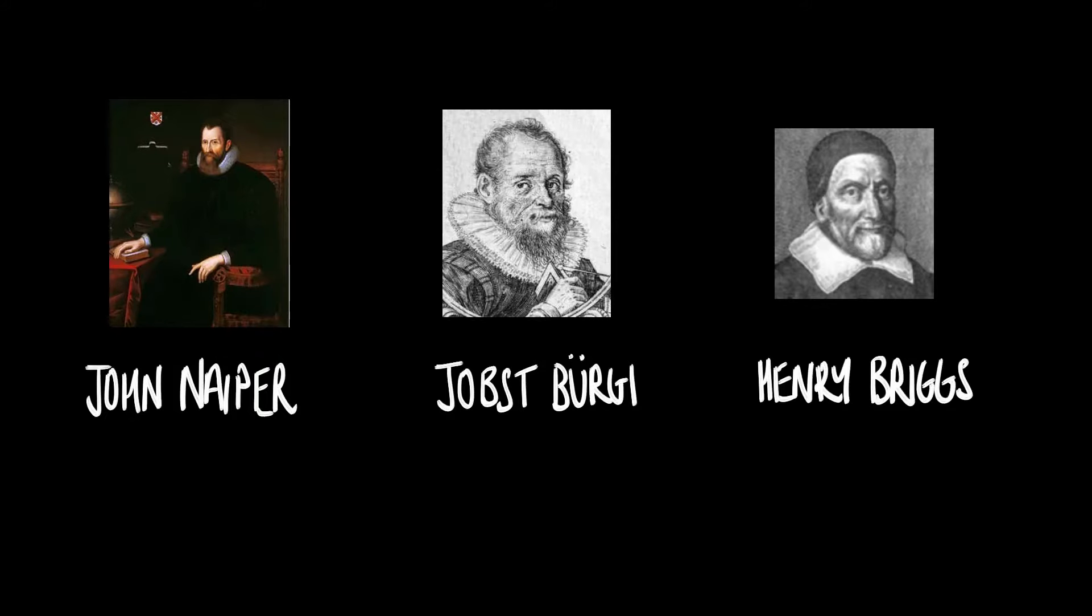Anyway, let's get into it. The history of logarithms involves three main characters all residing around the late 16th and early 17th century. The characters in question are John Napier, Joost Berge, and Henry Briggs.